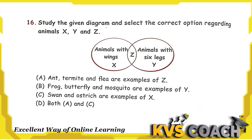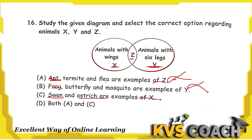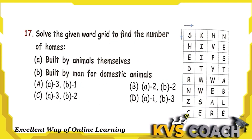Question 15: Study the diagram where X is animals with wings, Y is animals with six legs, and Z is animals with both wings and legs. Option A — termite and flea as examples of Z — is incorrect because flea doesn't have wings. Option B — frog, butterfly, mosquito as Y — is incorrect because frog has four legs, not six. Option C — swan and ostrich as examples of X (animals with wings) — is correct because both have wings, even though ostrich cannot fly. Option C is the right answer.